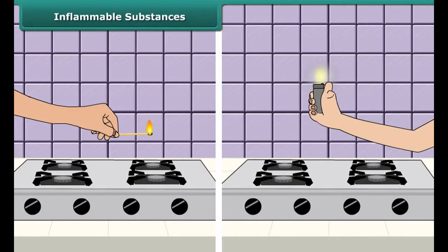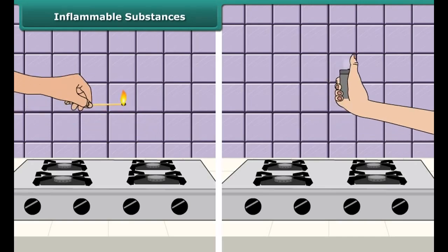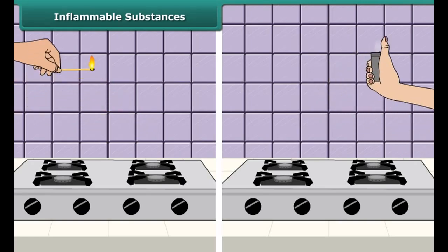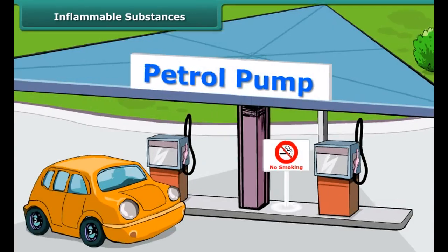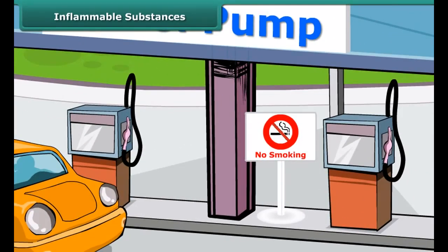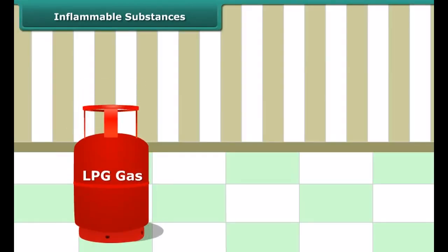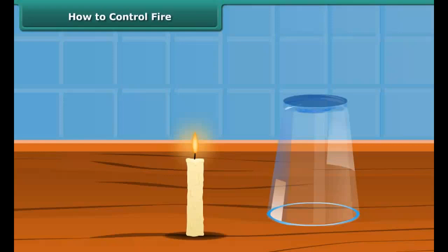Your mother would have told you to keep a burning matchstick or lighter away from the LPG gas stove in the kitchen, because LPG catches fire very easily. Similarly, you must have seen a 'No Smoking' sign at petrol pumps, because petrol also catches fire very easily. Substances like LPG and petrol are inflammable because they have a low ignition temperature, due to which they readily catch fire.